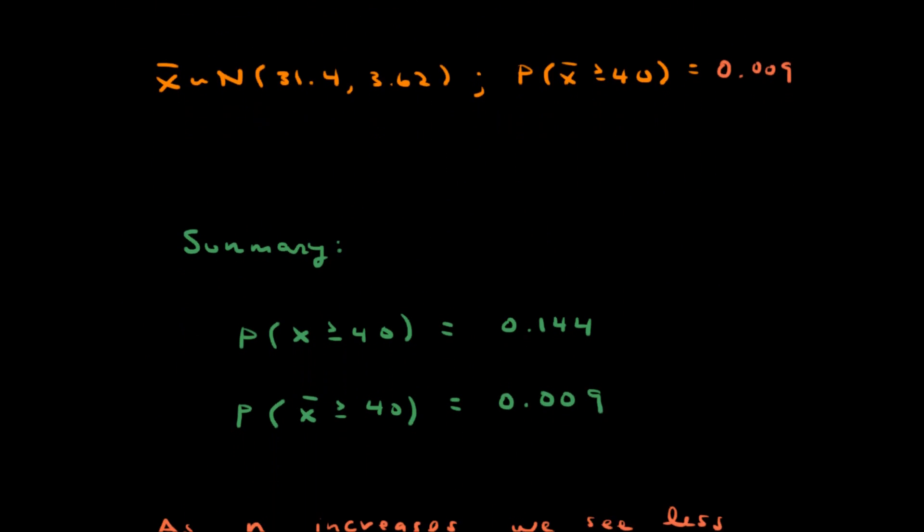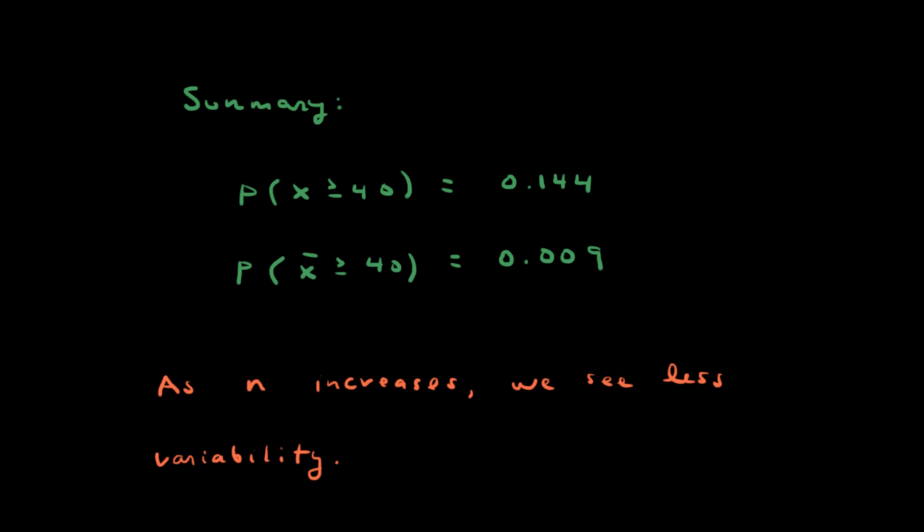And then a quick summary. So the probability that a single observation was greater than 40 is 0.144. The probability that an average of 5 observations is greater than 40 is 0.009. You see this number is less than this number. And the idea here is that as n increases, as the sample size increases, we see less variability. So if we were to take a sample of size 10, this number would become even smaller. If we were looking at a sample of size 20, it would become even smaller.